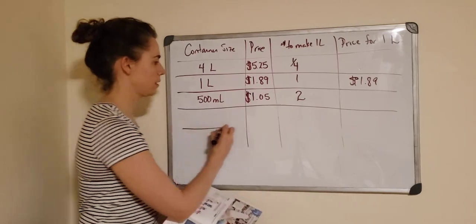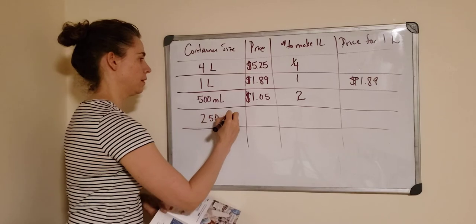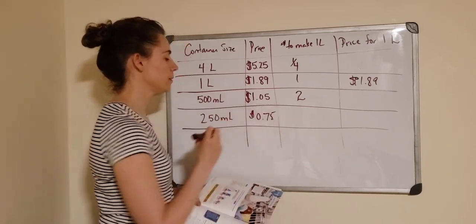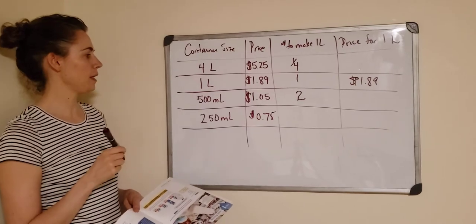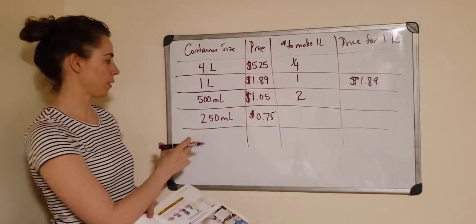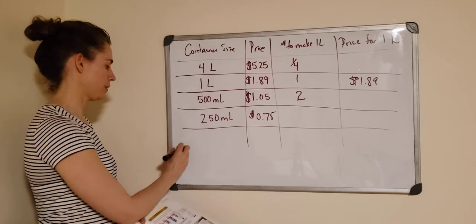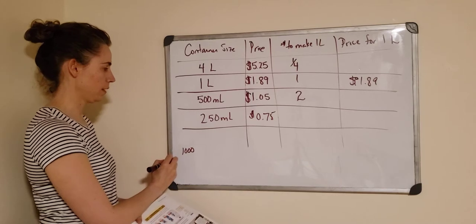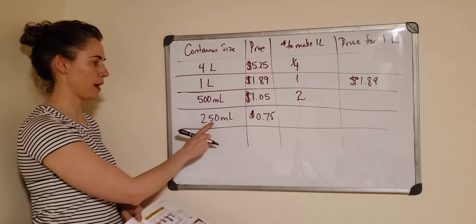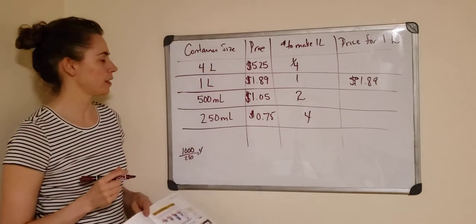The last one is 250 milliliters and that price is 75 cents. How many of these do we need to make one liter? We need four of them. Because 1,000 is one liter divided by 250 is four. So if we had four of those, we'd have one liter.